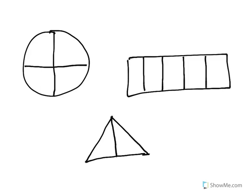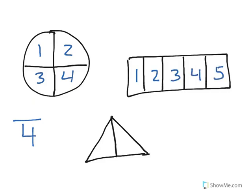If we look at these pictures, in the first one we can count one, two, three, four — so our denominator here would be four. In the next one we count one, two, three, four, five — so our denominator for this one would be five. And the triangle down here is a simple one: one, two — our denominator is two. In each of those you can see that the denominator tells us how many pieces we have all together, how many equal parts there are.